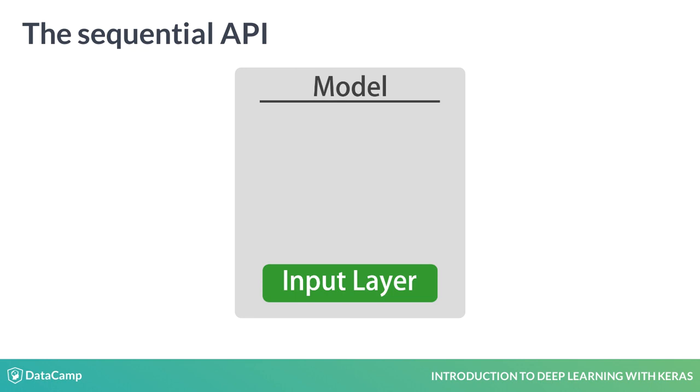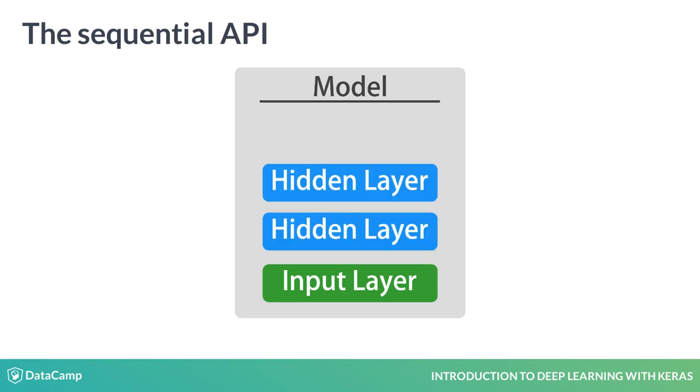This is a simple yet very powerful way of building neural networks that will get you covered for most use cases. With the sequential API, you are essentially building a model as a stack of layers. You can start with an input layer, add a couple of hidden layers, and finally end your model by adding an output layer.